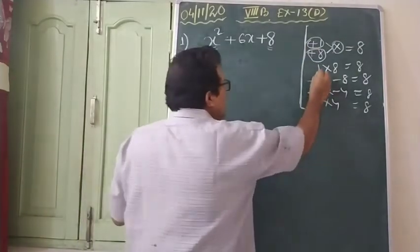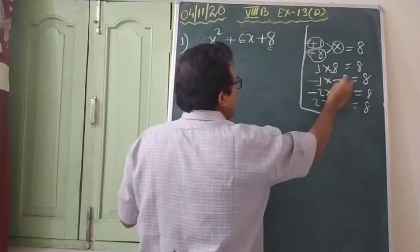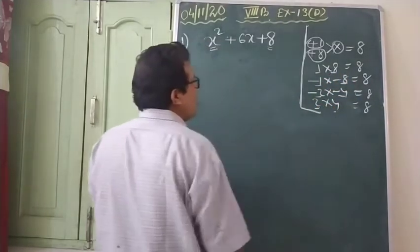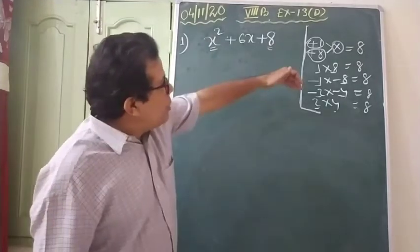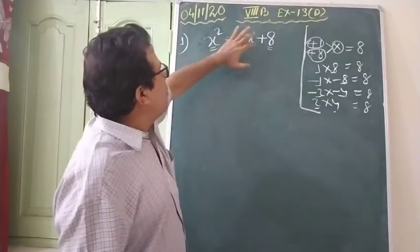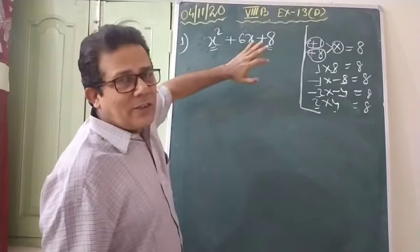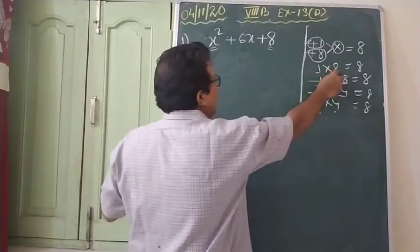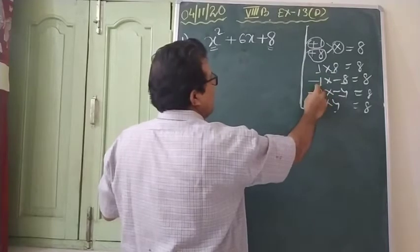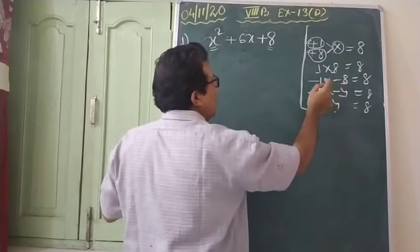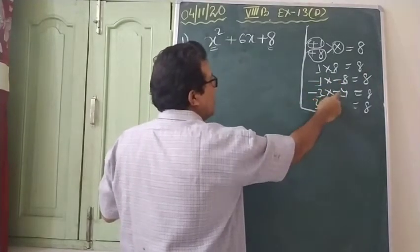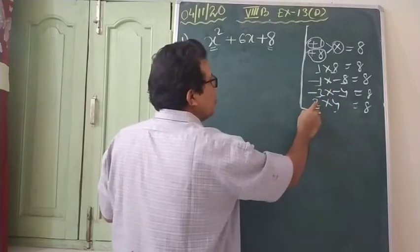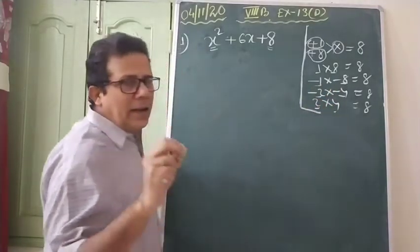Now, with the help of these factors — 1, 8, minus 1, minus 8, minus 2, minus 4, 2, and 4 — you have to see by which factors, by adding them, you are going to get 6. So here: 8 and 1, if you add them, it becomes 9. Minus 8 and minus 1, if you add them, it becomes minus 9. Minus 2 and minus 4, if you add them, it becomes minus 6. But 2 plus 4, if you add them, it is coming 6.